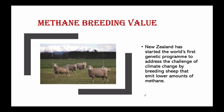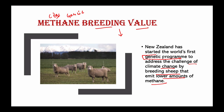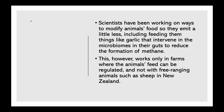Now we shift to our next topic: Methane Breeding Value. For examination purposes, you should know about carbon equivalents and GHG emission control. The context is that New Zealand has started the world's first genetic program trying to address the challenge of climate change by breeding sheep that emit lower amounts of methane. Emissions from animals — they burp and emit gases — so ruminants such as sheep and cows are major contributors to methane in the atmosphere.